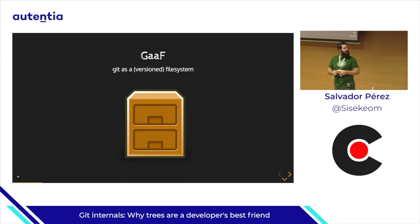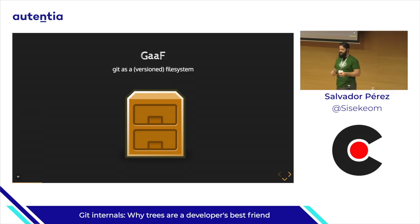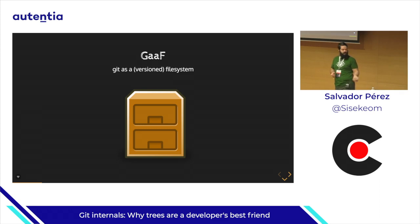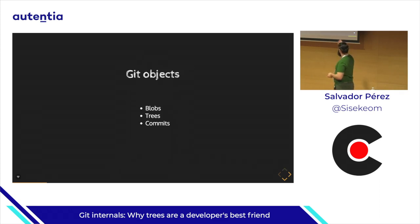I decided to name this part of the talk 'Git as a version file system,' because that's kind of what actually happens behind the scenes in git. Git manages three kinds of objects: blobs, trees, and commits.